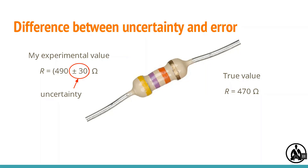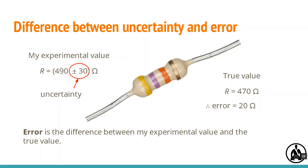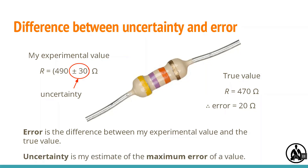If the true value is 470 ohms, that means my value is actually off by 20 ohms. It's 20 ohms too big, and we call this the error of my value. So error is the difference between my experimental value and the true value, and we can say that uncertainty is my estimate of the maximum error of a value.